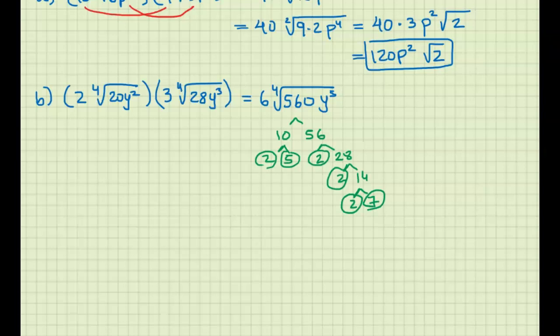So we have 6∜ of four 2's, so this is 2⁴. We have a 5 and a 7. y⁵ we're going to separate as y⁴ and y¹ because we want exponents that divide by 4.